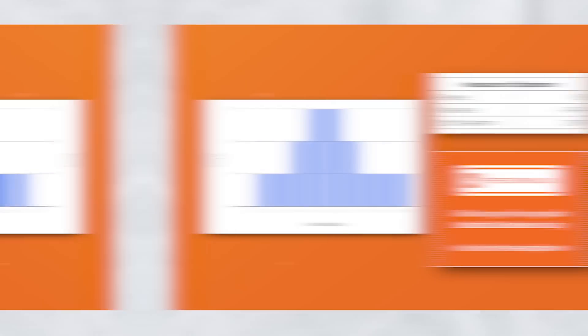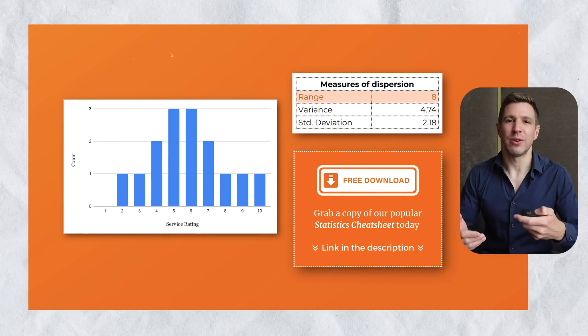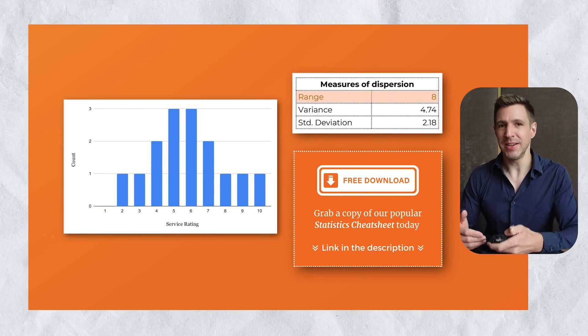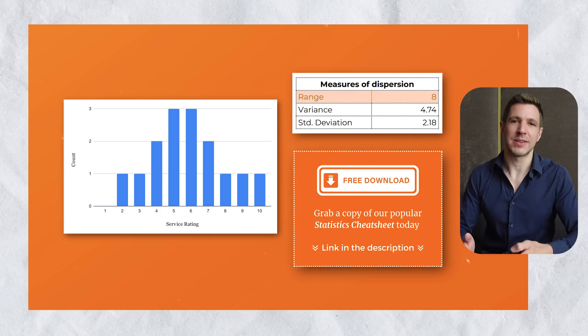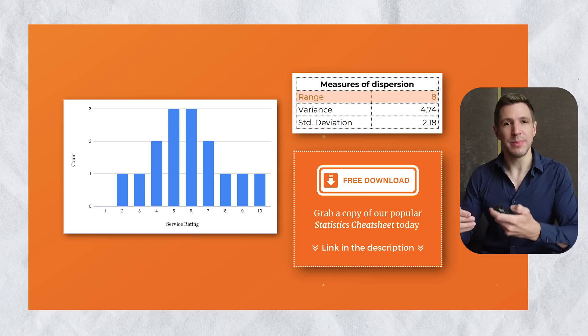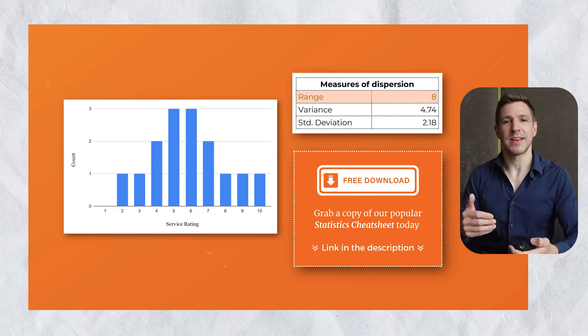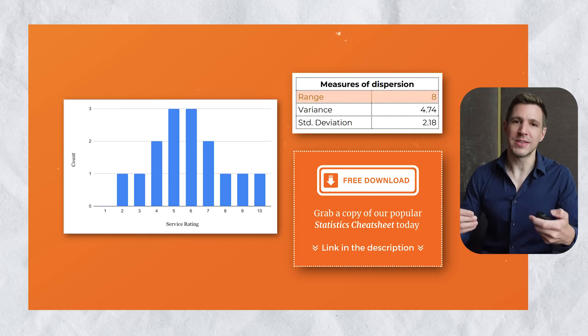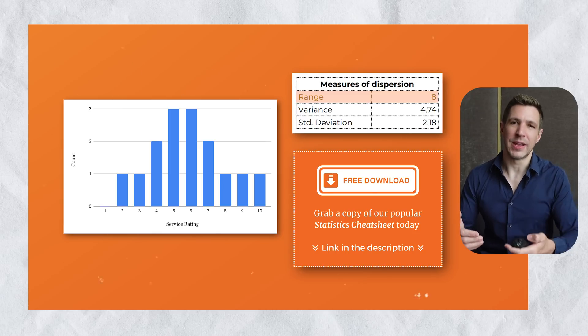This probably all sounds a little bit conceptual and mathematical, so let's look at our sample dataset to make things more tangible. The range of 8 reflects the difference between the highest rating of 10 and the lowest rating of 2. So right away we can see that there is at least some possibility of this dataset being quite spread out, as 8 on a scale of 1 to 10 is a pretty high number.